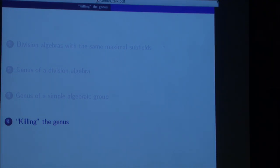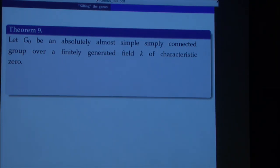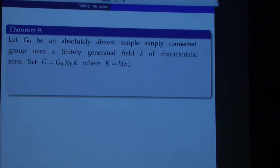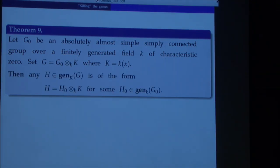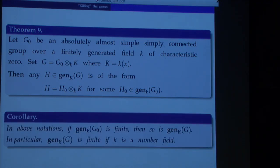Before I kill anything, here is one more consequence of Theorem 7 — which stated that if the group itself is unramified, then everything in the genus is unramified. The consequence is: suppose we have an absolutely almost simple algebraic group over a finitely generated field of characteristic zero, and we do the base change to a purely transcendental extension. Then the genus acquires nothing new — anything in the genus over this purely transcendental extension actually comes from the genus over the base field. So in particular, if the genus over the base field was finite, it will remain finite after this base change.